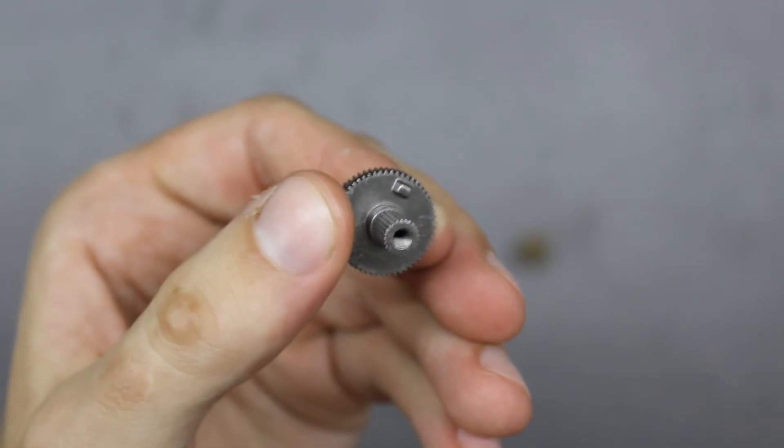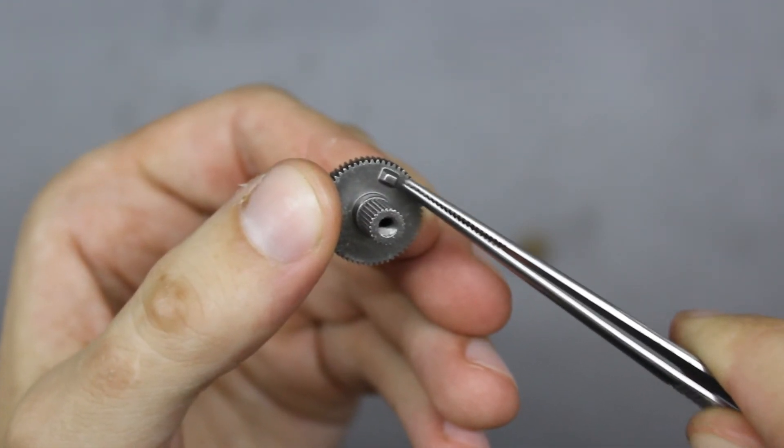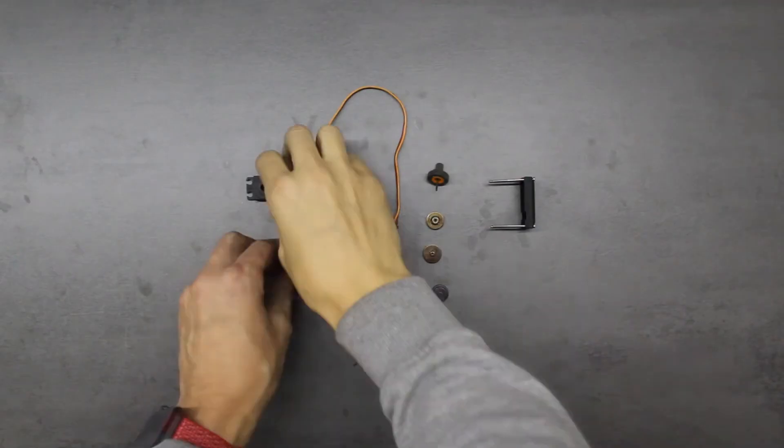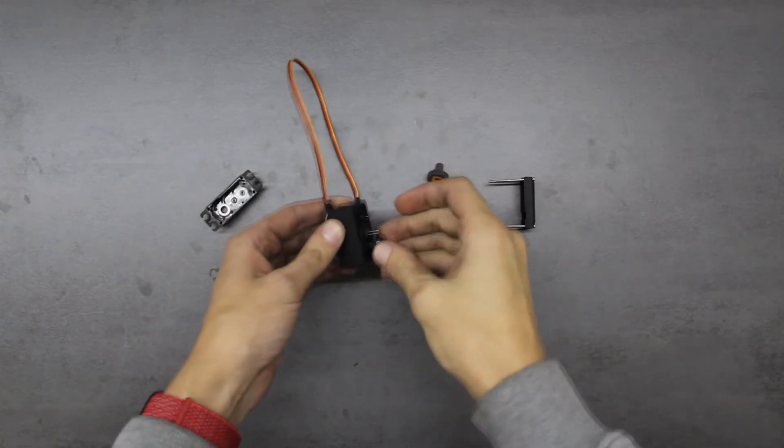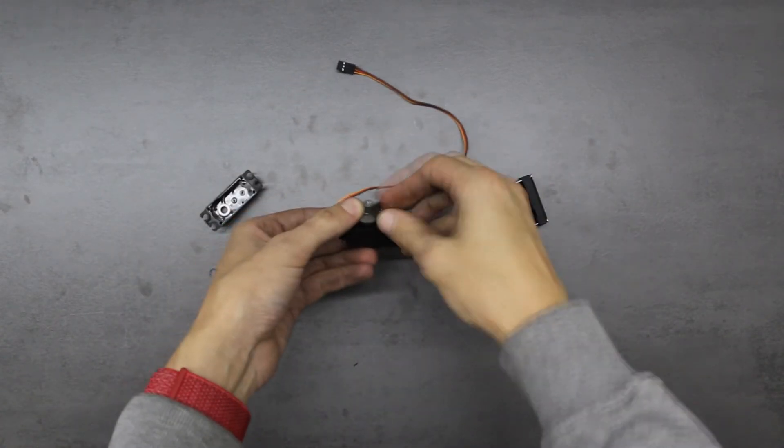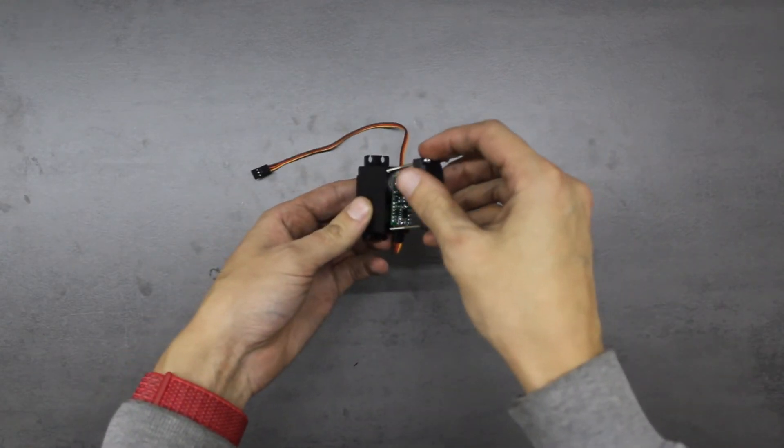In the last step before assembling the servo together we must cut off this pin otherwise it will block the servo rotation. When it's done we can put all parts together, screw in all four screws, and try if it works as expected.